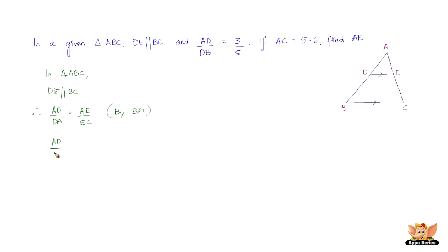So now again, we know what is AD/DB and we need to find AE. So retain AE. EC can be written as AC minus AE. So we can write AD/DB as 3/5, because that's the given data. And we've got AE, because we have to find AE. AC is 5.6. So, 5.6 minus AE. It's again a very simple mathematical equation. We just have to solve for AE.